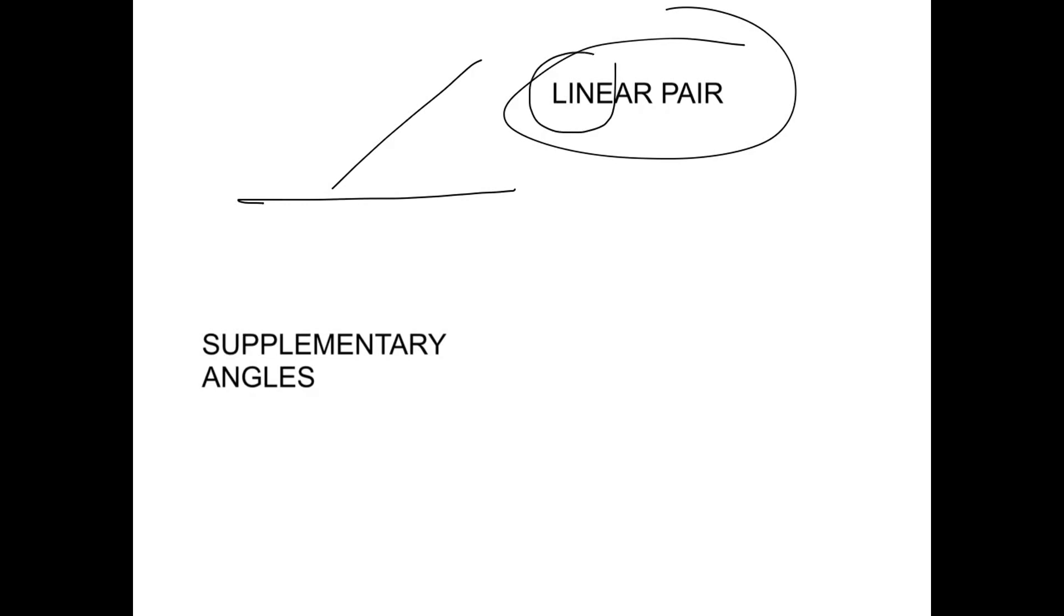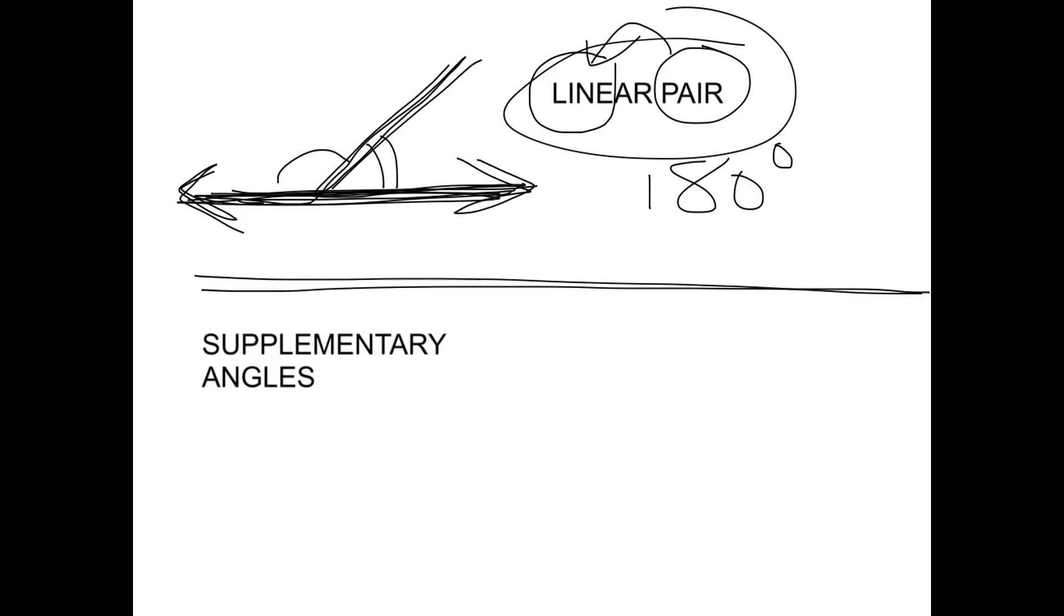For instance, right here you got this angle and this angle put together make this straight line. Now you know that whenever you have a line that is 180 degrees, right, so you know this angle plus this angle is 180 degrees. They add up to 180 because they make a straight line.